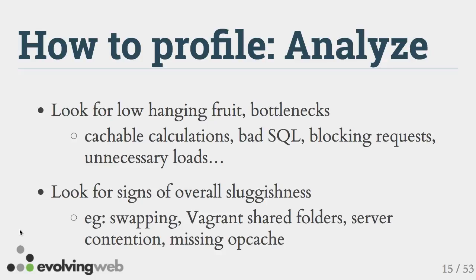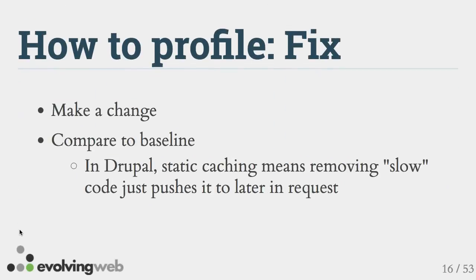Sometimes you look at the report and see overall sluggishness — everything's slower than it should be but no specific bottleneck stands out. You have to think about what might be going on: is it a heavy site, a slow server, or maybe you're running out of RAM causing swapping? In development, running Vagrant with VirtualBox shared folders really slows Drupal down. Other factors: server contention on shared hosting, or not having Opcache installed.